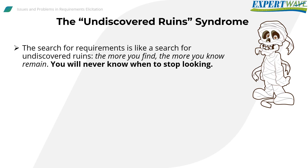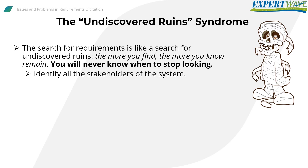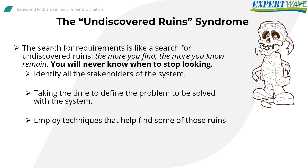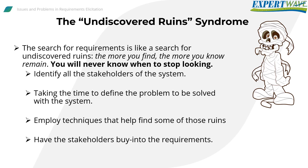One way to overcome this syndrome is to identify all the stakeholders of the system. Many of these hidden stakeholders are often holders of otherwise undiscovered requirements. Taking the time to define the problem to be solved by the system helps scope the requirements elicitation effort early. Employ techniques that help find those ruins and have stakeholders buy in to the requirements. At some point, we should be able to say with confidence: we have discovered enough for now — we'll find the rest later.